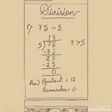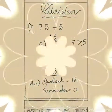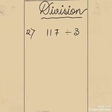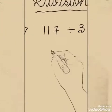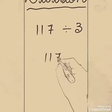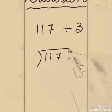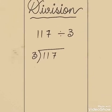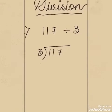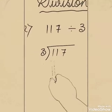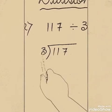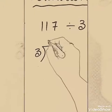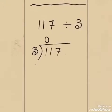Now let's do the second one. Second sum: 117 divided by 3. We will write 117 — the dividend — in the middle, and 3 outside the division symbol. Now do the inspection. First digit is 1. 1 is less than 3, so we will put a 0 on top of it.